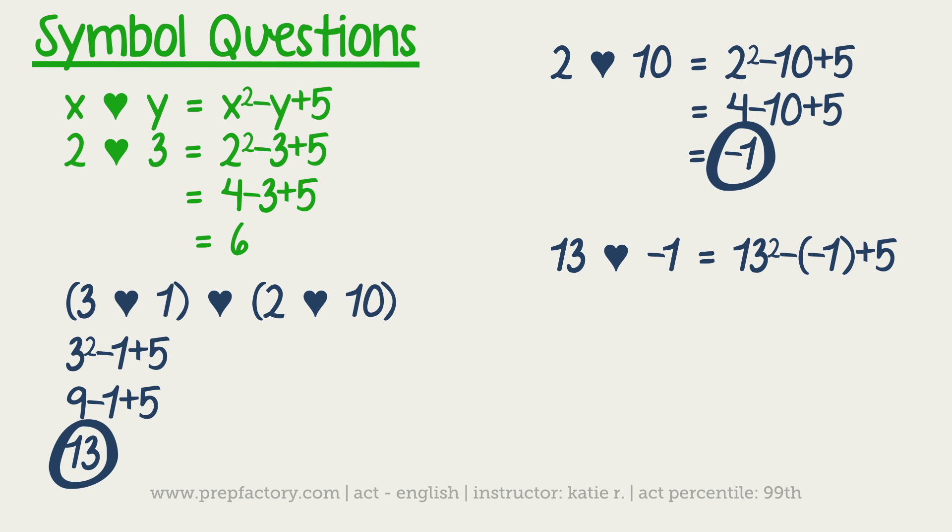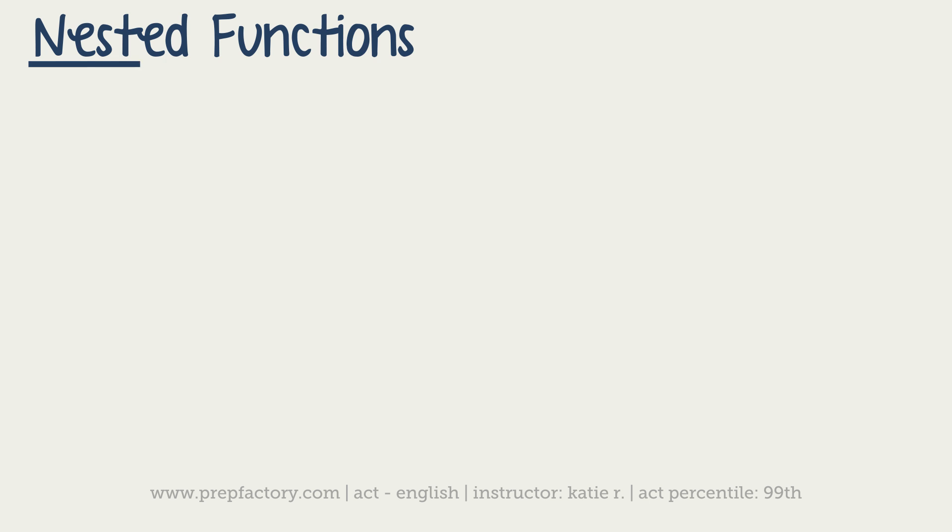Here's an example inequality problem. If 8 minus 2x is greater than 6, what are all the possible values of x? Basically we're just going to simplify this. We would start off with our equation, so 8 minus 2x is greater than 6, and then you want to isolate x. Treat this the same exact way you would any other normal equation. You're going to take away 8 from both sides, so you'd have negative 2x is greater than negative 2. Then you're going to divide by negative 2.